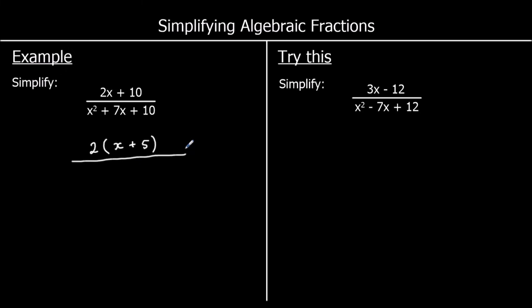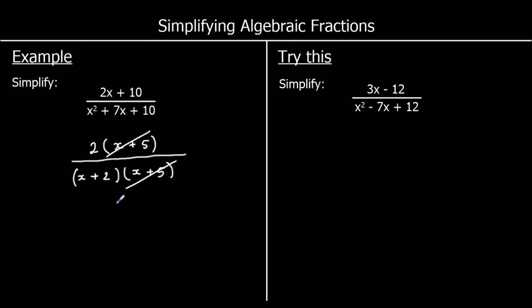On the bottom, we can factorise into double brackets. We have x in both brackets, and we look for what multiplies to make 10 and adds to make 7. That's 2 and 5, so it's (x plus 2)(x plus 5). We can see we can divide the top and the bottom by x plus 5, which leaves us with 2 over x plus 2. And that's our simplified answer.